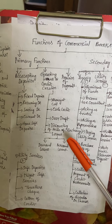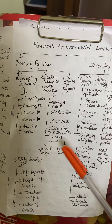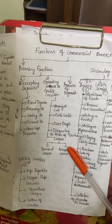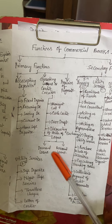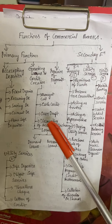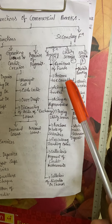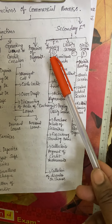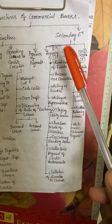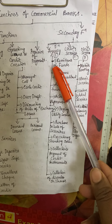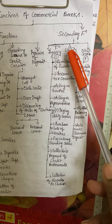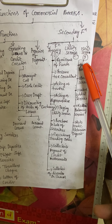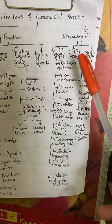Demand loans and personal loans are also there, so in this way credit creation covers these different categories. The other major area is secondary functions. Under secondary functions, we again have three categories: agency functions, utility services, and new services.